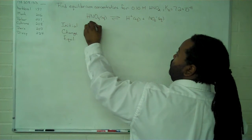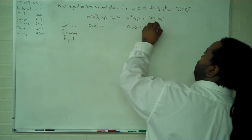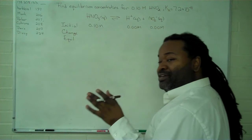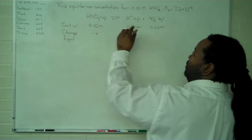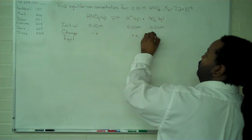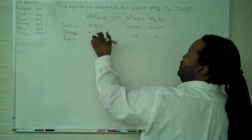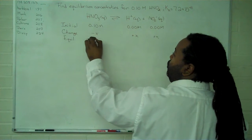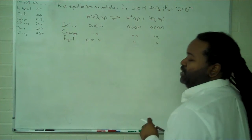So we start out with 0.10 molar here. We have nothing here and here, so no common ions to worry about. For every one mole we give up here, we pick up one mole for both of these. And so the equilibrium line is just the sum of these two. So we have 0.10 minus x, and we just have x and x.